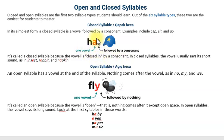Yəni sait səs samit səslə bağlanıb, sait-dən sonra samit gəlib. In closed syllables, the vowel usually says its short sound, as in insect, rabbit and napkin. Qapalı hecalarda sait səslər adətən qısa səslənir, qısa səs verir.